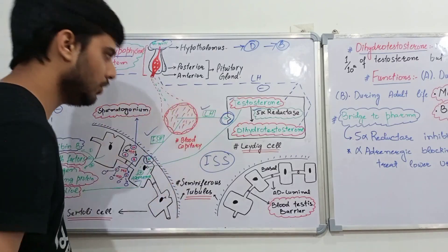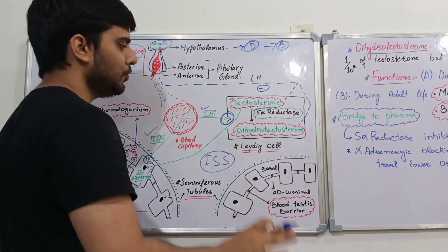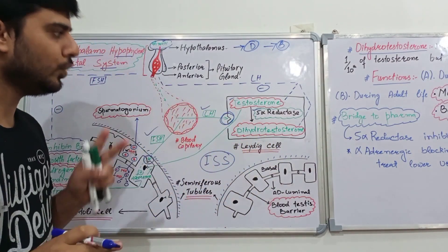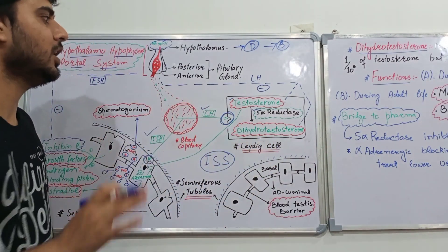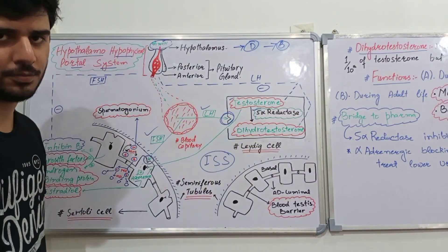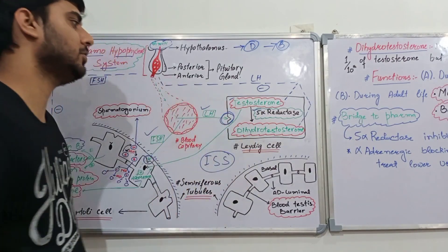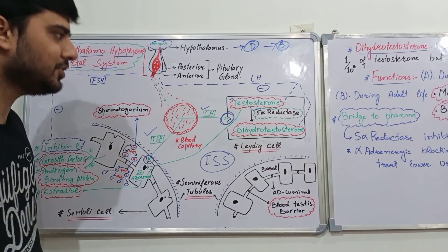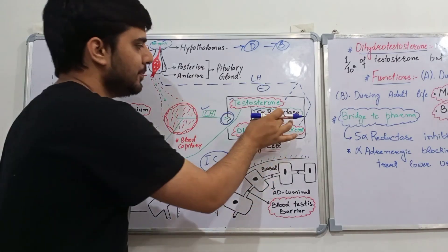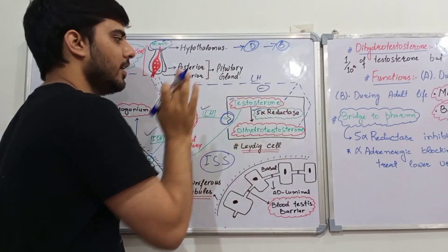We will first discuss the luteinizing hormone. After the luteinizing hormone stimulates the Leydig cells, it causes the release of two important hormones: one is testosterone, and the other is dihydrotestosterone. This dihydrotestosterone is actually produced from testosterone itself in the presence of an important enzyme known as 5-alpha reductase.